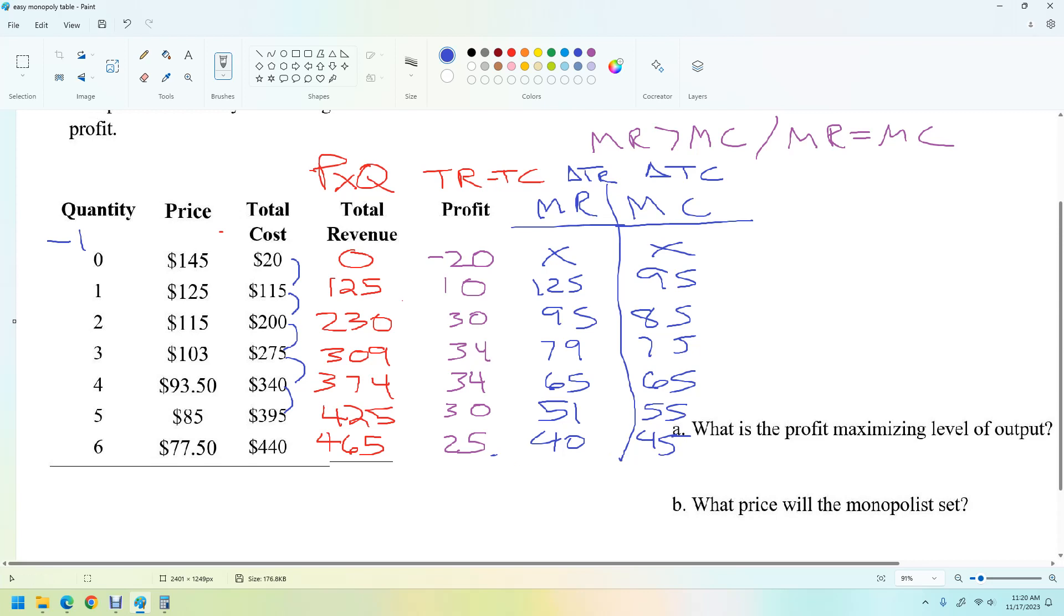So now we can actually see the profit maximizing quantity is going to be right here because this is the last quantity where this happens or the only quantity where that happens. If you produce the next one, marginal cost is higher by 4, so we don't want to produce that. So the answer is 4.